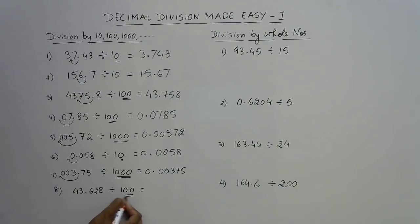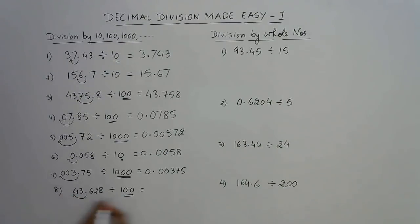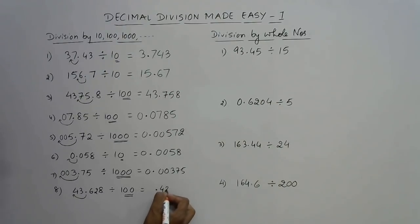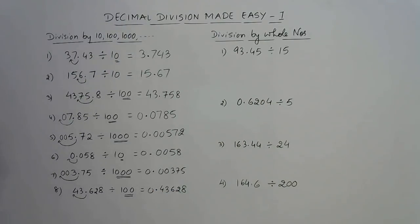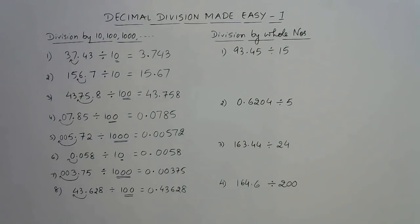Likewise, where we have two digits, we put the decimal accordingly, giving 0.43628 as the quotient — and again you can put a zero before the decimal. This is very simple and we need to be aware of these fundamentals in order to solve higher problems of decimal division.